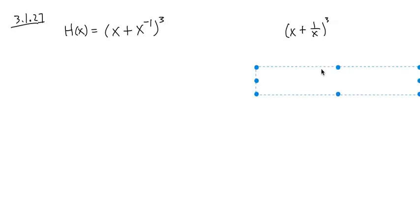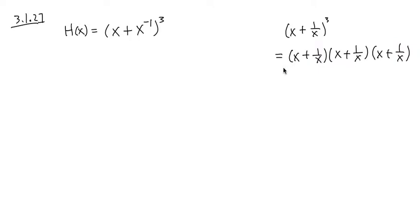It means that we have to write it down three times, right? x plus 1 over x, three times. And then we have to multiply them out. So let me work it out for you guys right here.